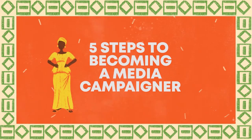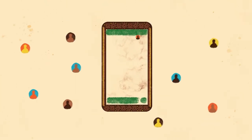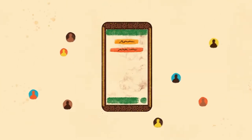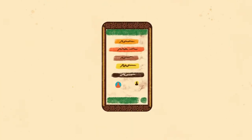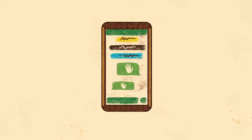5 Steps to Becoming a Media Campaigner. Step 1: Get a smartphone to connect with other activists and set up a WhatsApp group to make your media plans.